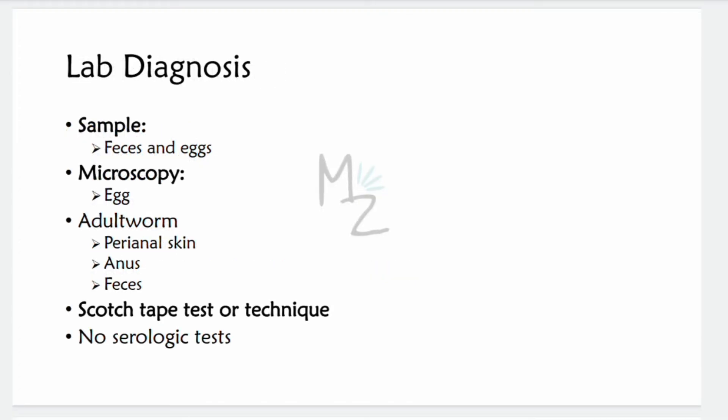Lab diagnosis: samples of feces and eggs are required. Microscopy is used to visualize the eggs — one side is flattened, the other is convex, with multiple membranes. The adult worm is visible on perianal skin, at the anus, or in feces. The Scotch tape test (also called cellophane tape test, Graham test, or real Graham test) is used for collecting the egg sample. No serologic tests are performed.